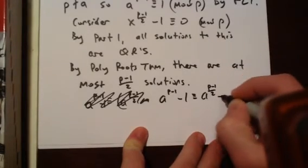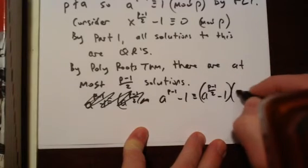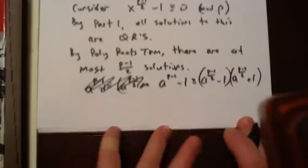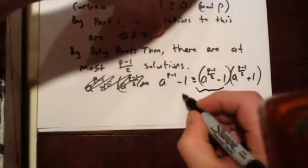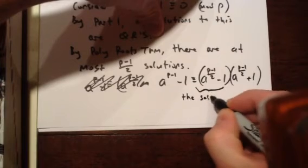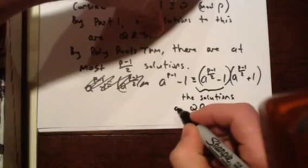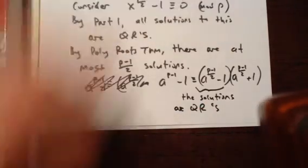So A to the P minus 1 over 2 minus 1 times A to the P minus 1 over 2 plus 1. And we know the solutions to this are exactly the QRs, the quadratic residues.